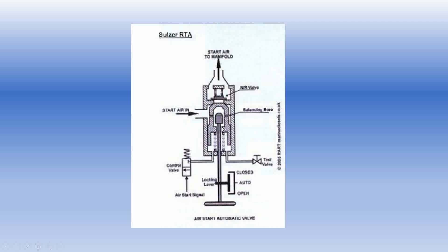When you give a start signal, the solenoid valve gets actuated. The control valve gets actuated and the air from beneath the valve gets vented. Once the air from beneath the valve gets vented, there is no air pressure acting below — only the spring pressure is keeping the valve closed. Hence, the 30 bar air acting on top of the valve will push the valve open, passing through the non-return valve and going to the starting air manifold.